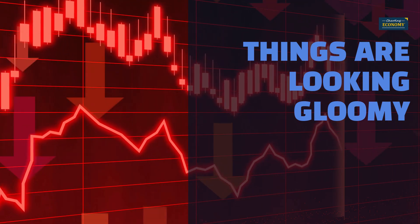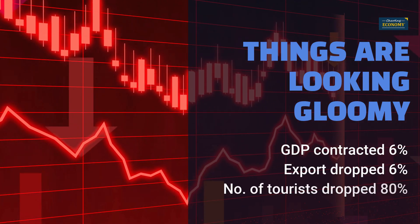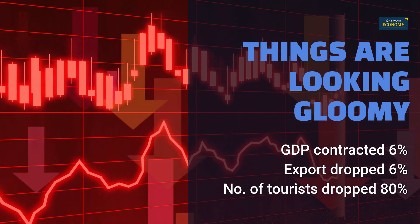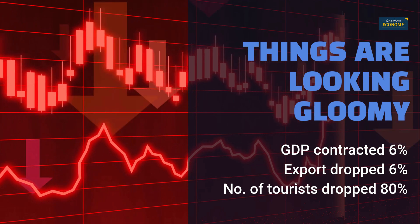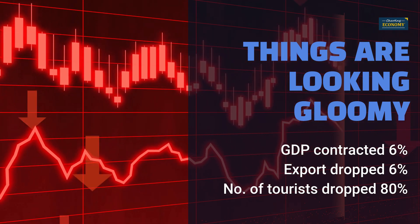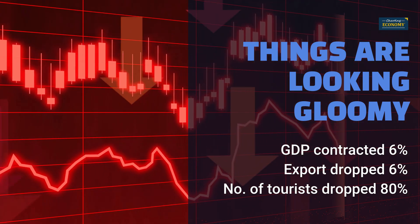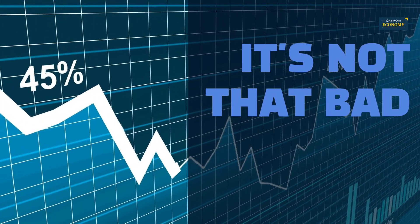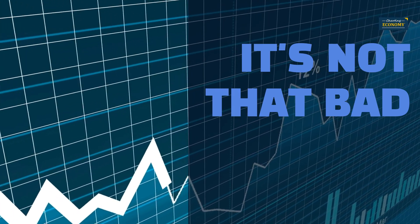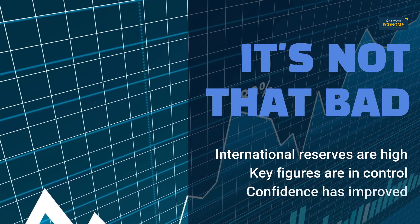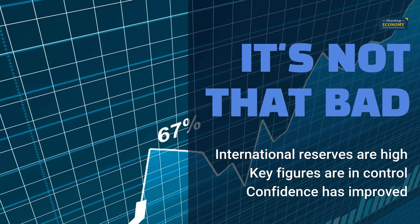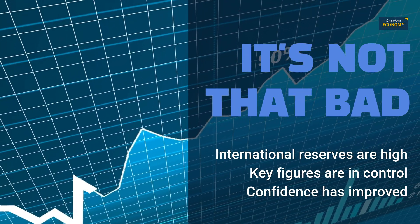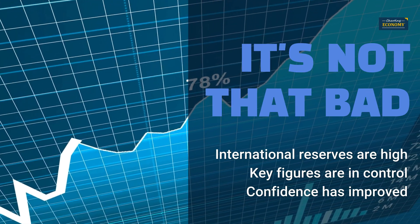The economy is poorly affected by the COVID crisis. It contracted more than 6% last year. Exports dropped by 6%. The number of tourists dropped more than 80%. Things are looking gloomy. On the other hand, the economy contracted less than others amid the COVID crisis. International reserves are still high. Public debt, unemployment, and inflation are in control. Consumer confidence has improved from the lowest point. Things are not that bad.